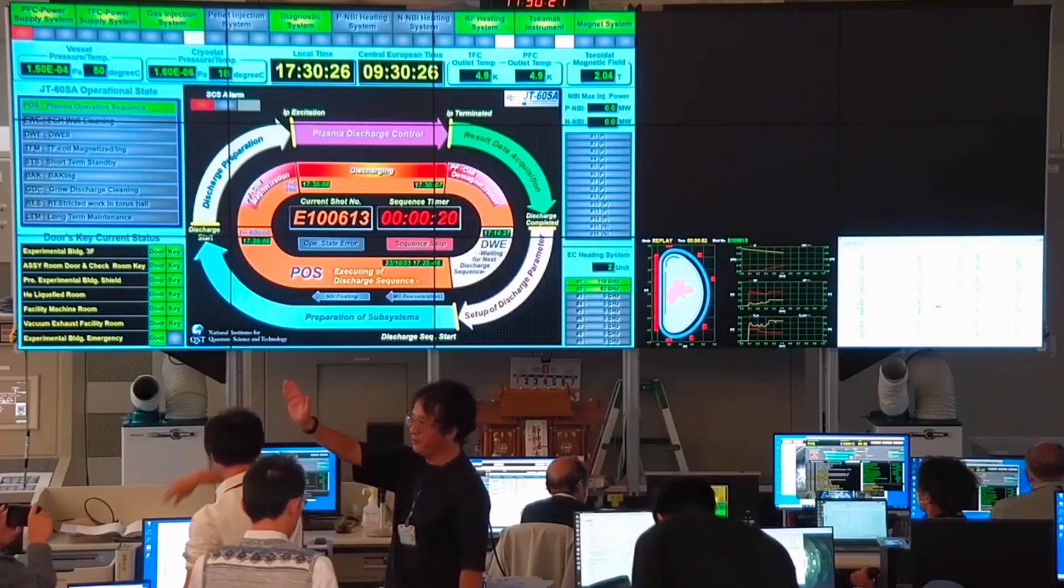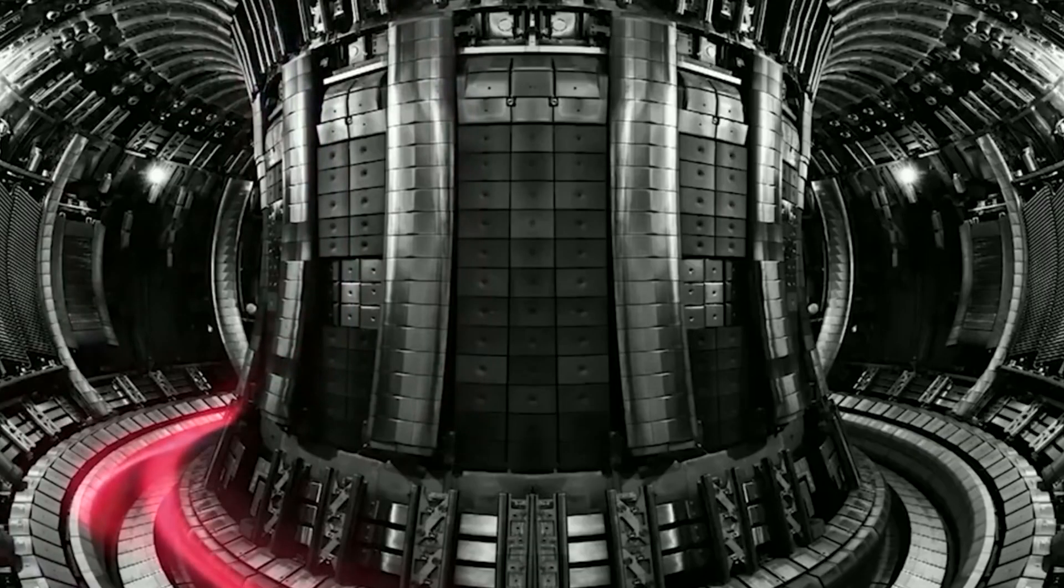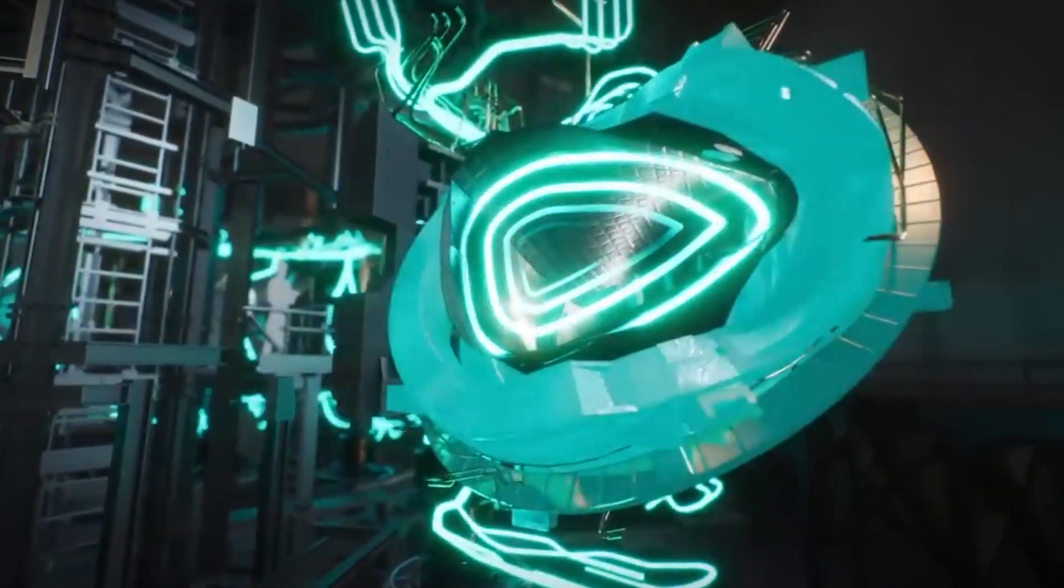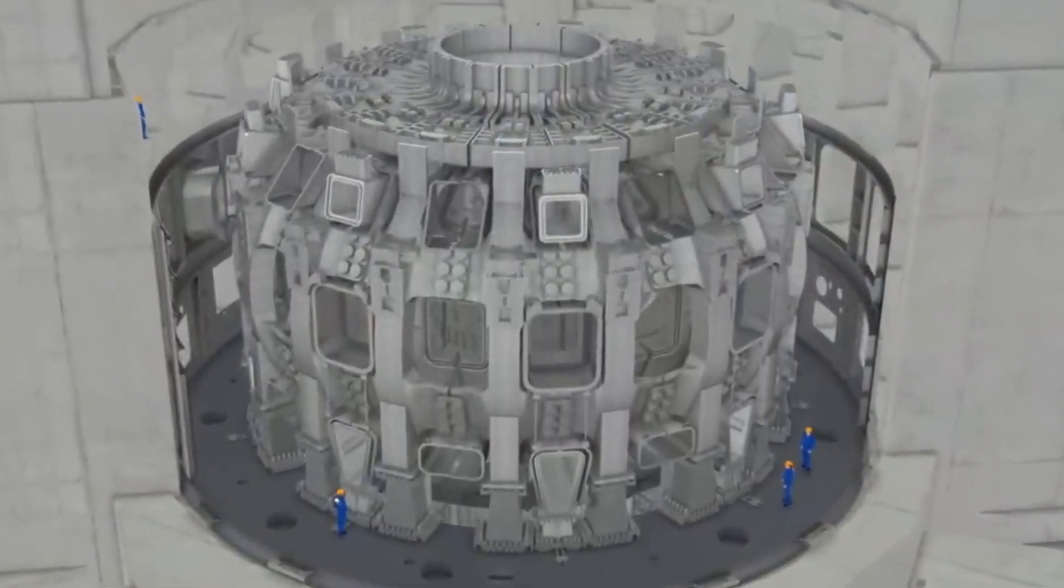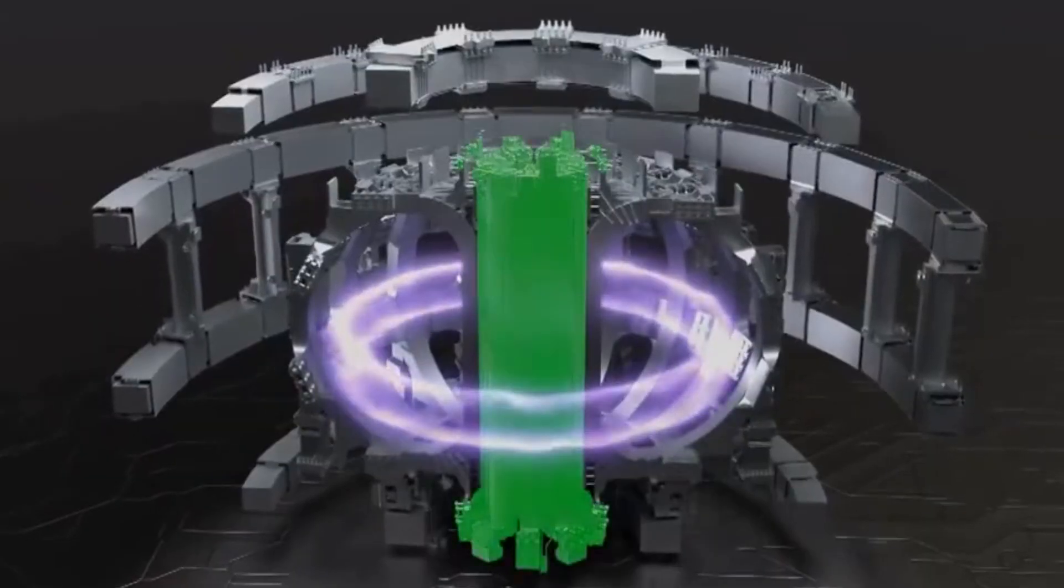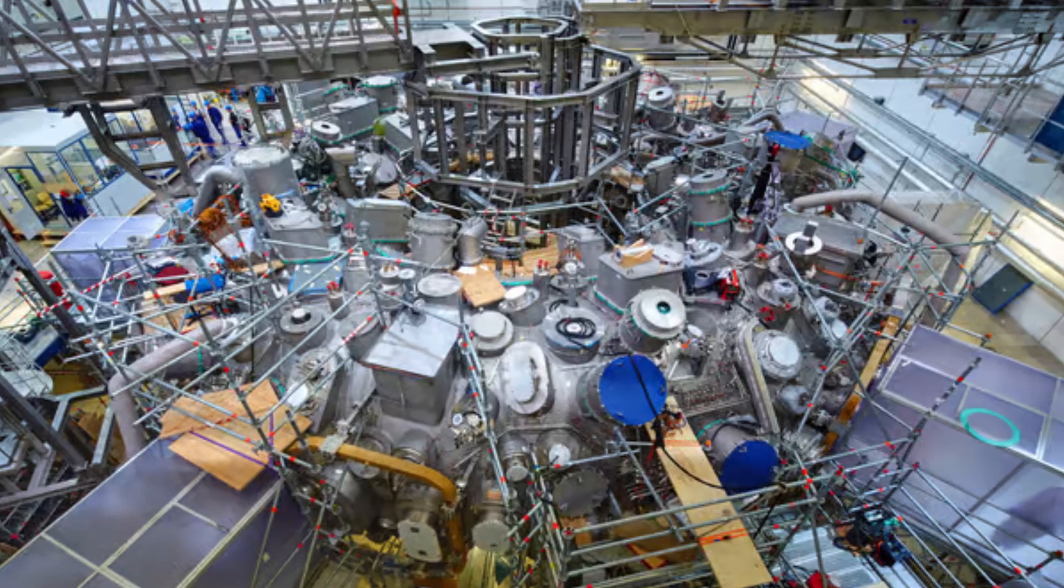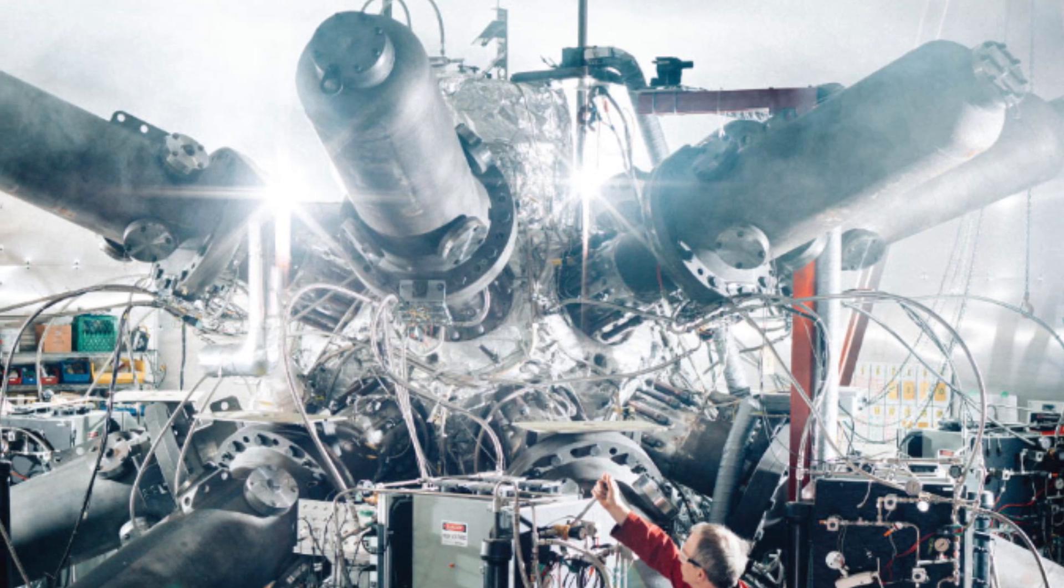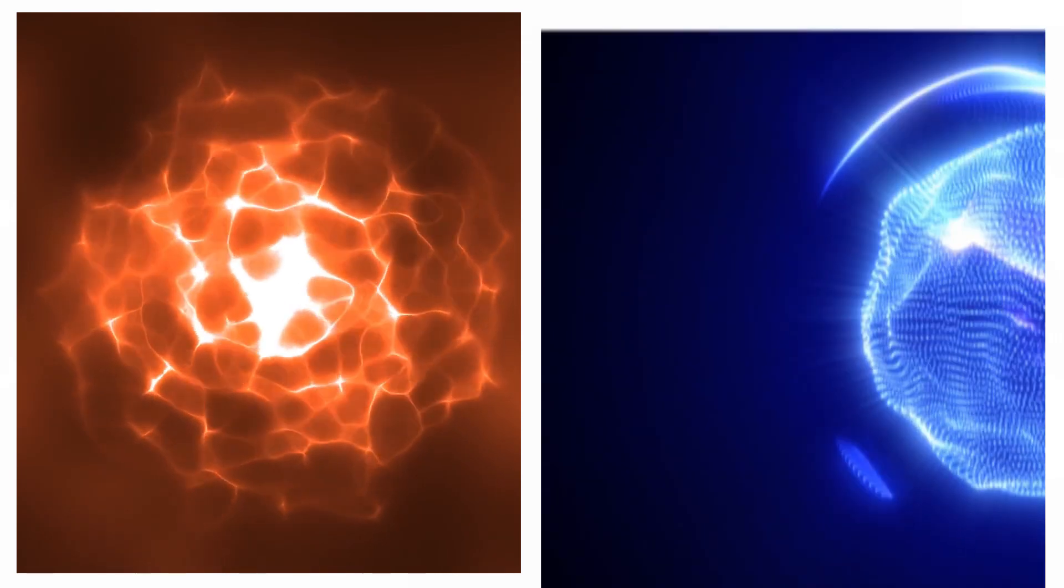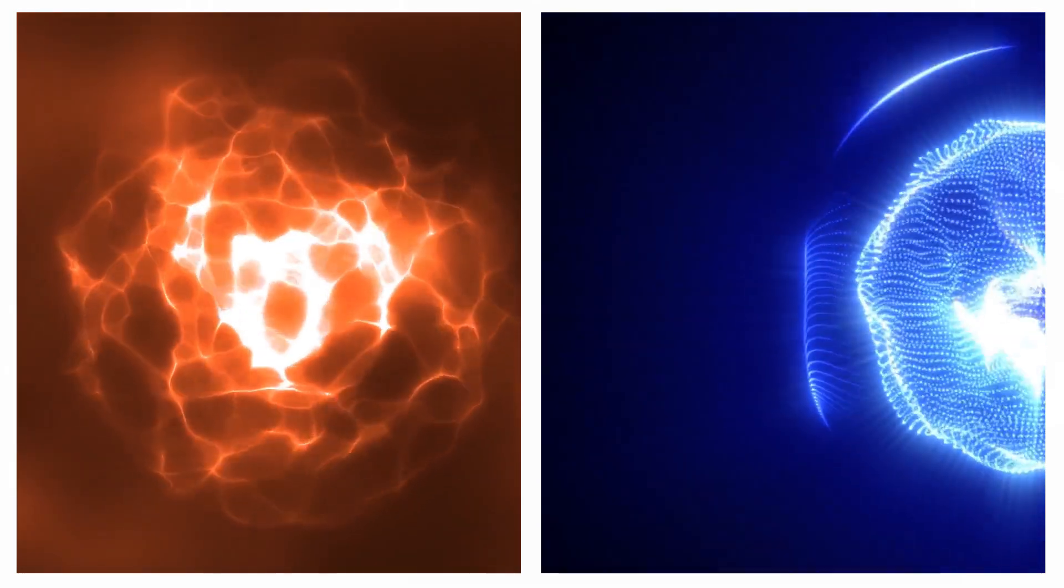In contrast, tokamaks boast minimal losses thanks to their symmetrical structure that mitigates magnetic field ripple effects. Stellarators, on the other hand, contend with challenges like small vortex motions and turbulence, both contributing to energy losses. To bridge this gap and match tokamak's confinement efficiency, the Wendelstein 7X undertook a magnetic field overhaul, strategically designed to minimize these losses. The results are impressive. Wendelstein 7X has not only achieved high-temperature plasmas, but also clinched the stellarator world record for fusion products at elevated temperatures. This triumphant combination of plasma temperature, density, and energy confinement duration brings us remarkably close to the coveted values for burning plasma.